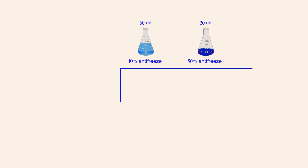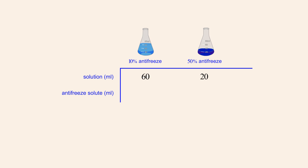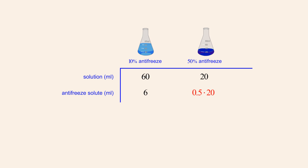Let's start by creating a table which shows the volume of each solution and the volume of pure antifreeze solute contained in each solution. We know that the volume of the ten percent solution is sixty milliliters and the volume of the fifty percent solution is twenty milliliters. Since the volume of pure antifreeze in the ten percent solution was ten percent of sixty milliliters, the volume of antifreeze in that solution was zero point one times sixty, or six milliliters. Likewise, the volume of pure antifreeze in the fifty percent solution was fifty percent of twenty milliliters, or zero point five times twenty, or ten milliliters.